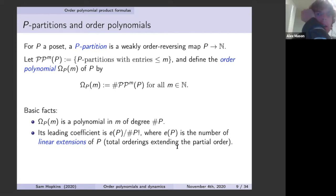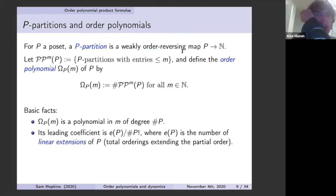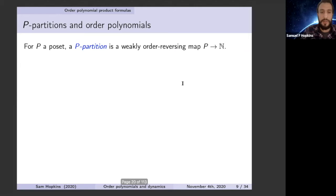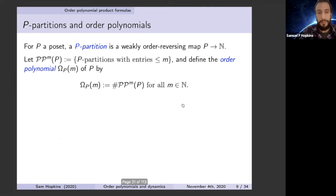The order polynomial is also an Ehrhart polynomial of the order polytope of the poset. To clarify: the inequalities in P-partitions are all less-than-or-equal-to, so we allow repeated values. Linear extensions, by contrast, require choosing a separate number for each element — they're order-preserving bijections. Plane partitions are an instance of P-partitions where the poset P is the product of two chains.